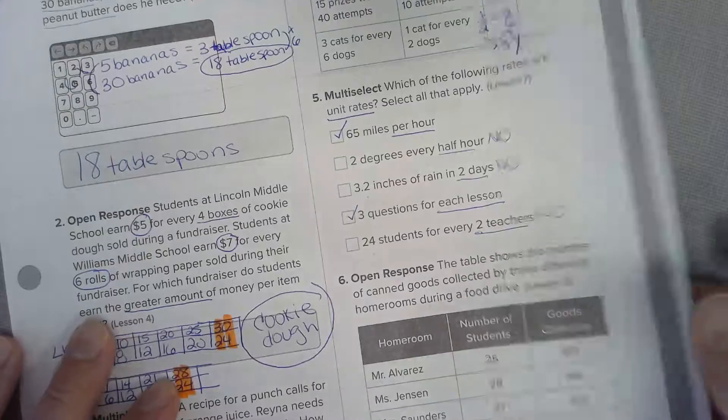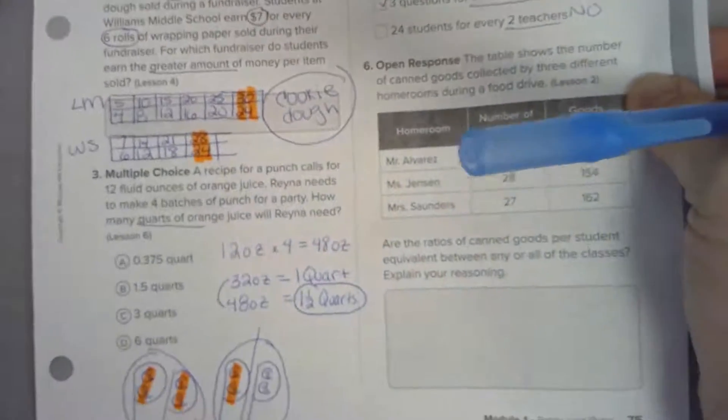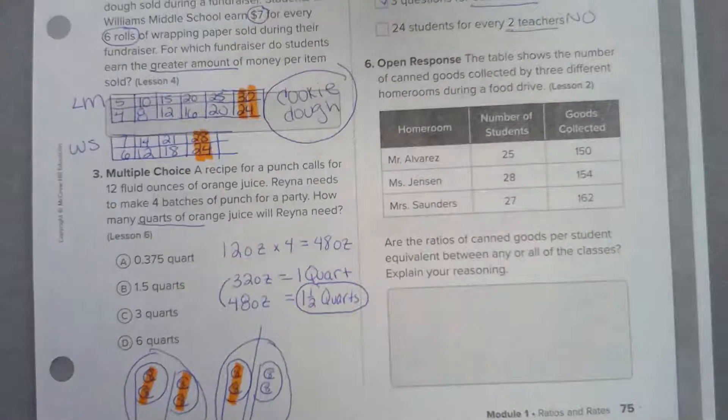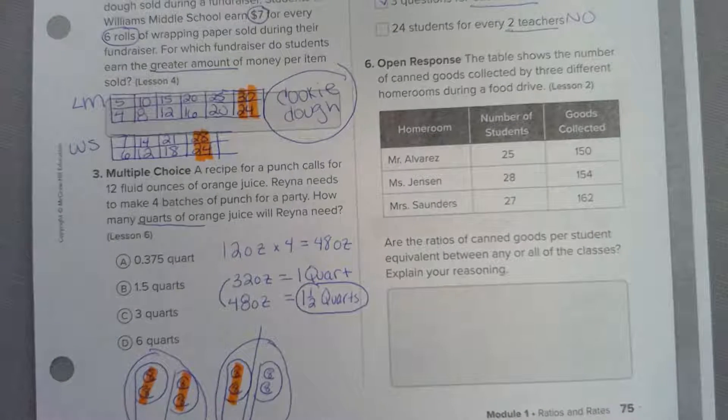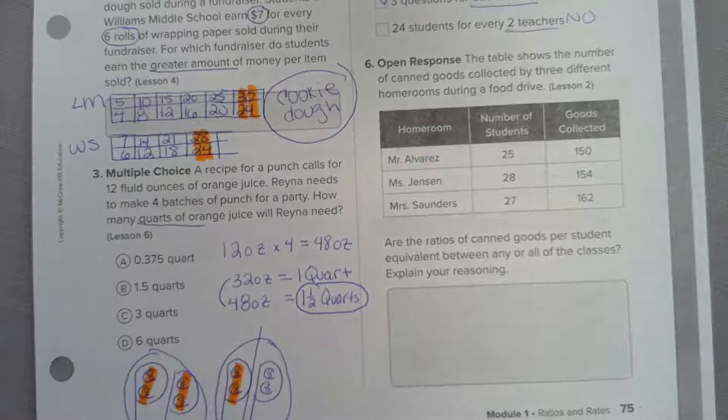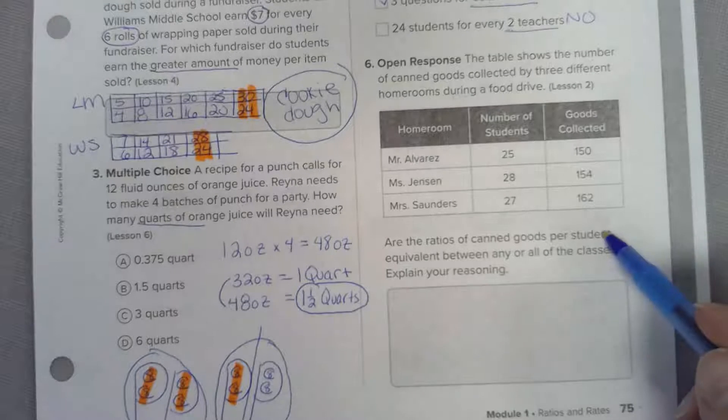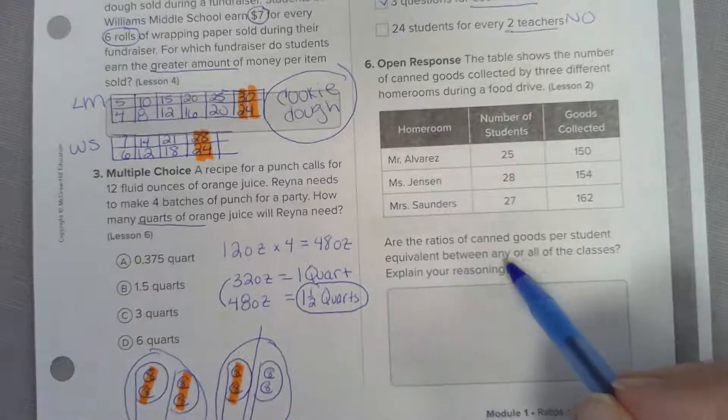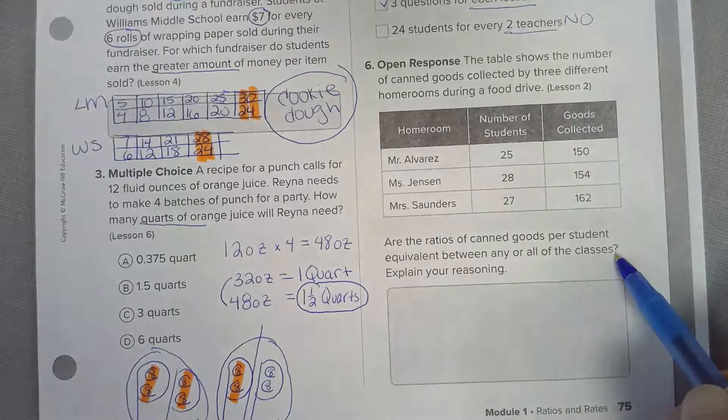Number six: the table shows the number of canned goods collected by three different homerooms. Are the ratio of canned goods per student equal between any or all of the classes? Explain yourself.